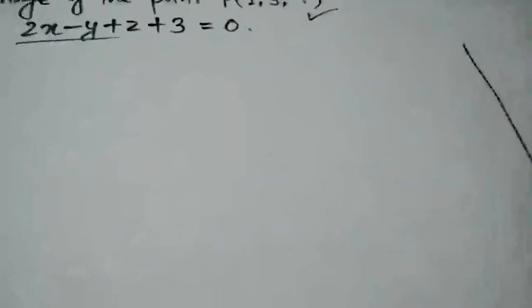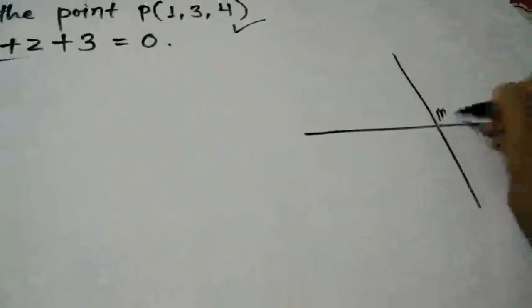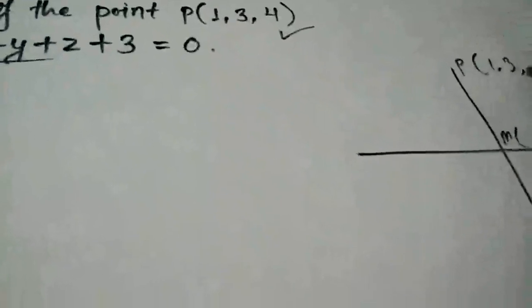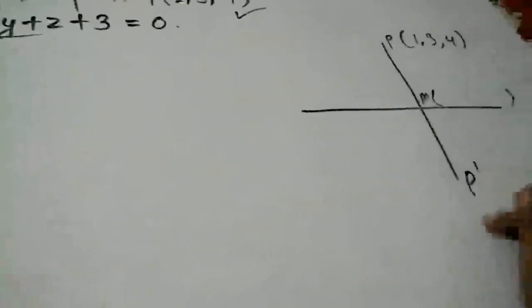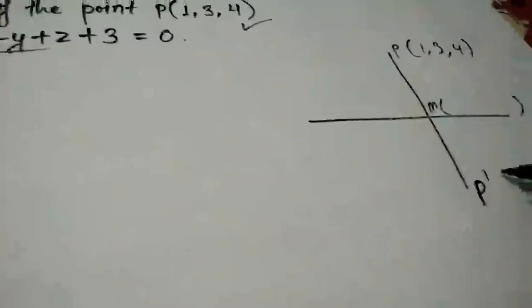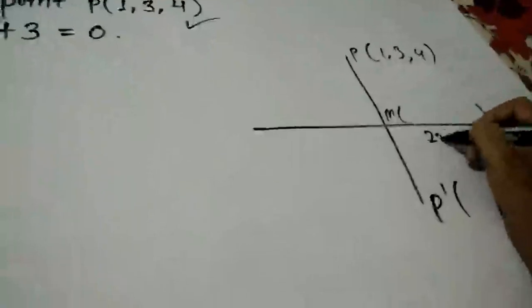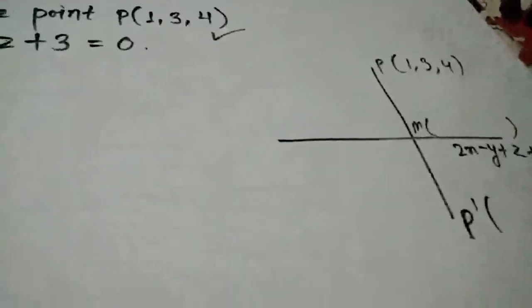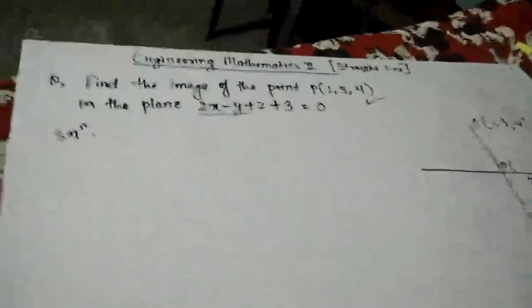On the right side I'll make a drawing. This is M, this is P given as (1, 3, 4), and this is P dash. The equation of the plane is 2x minus y plus z plus 3 equals 0.